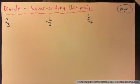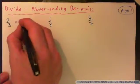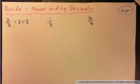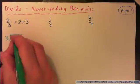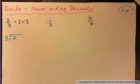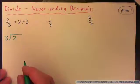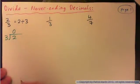If you have the fraction 2 thirds, let's turn that into a decimal. Because 2 thirds is 2 divided by 3, and it's also 3 into 2. Now if I do this simple little division, 3 into 2 goes 0 times.